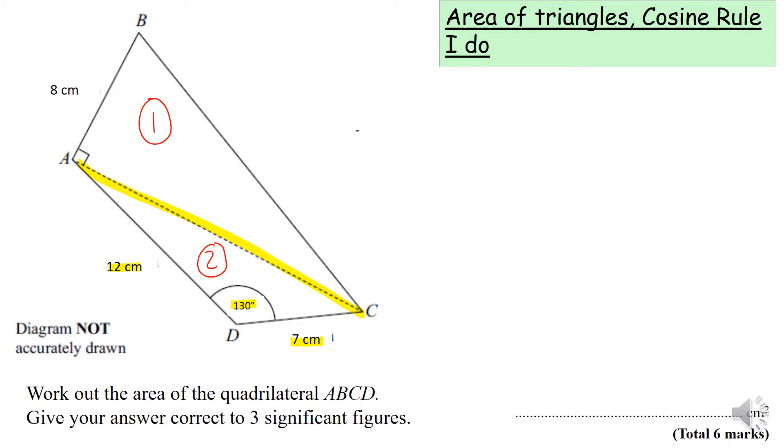The cosine rule is a squared equals b squared plus c squared minus 2bc times cos A. We label a as the missing length, and b and c can be in any order.